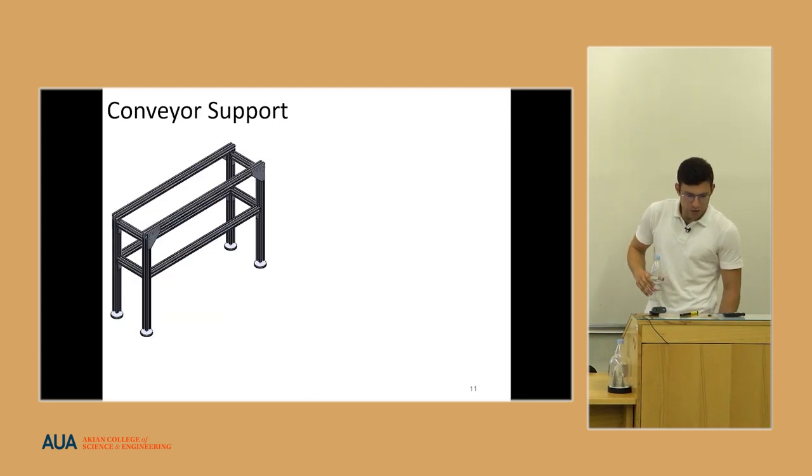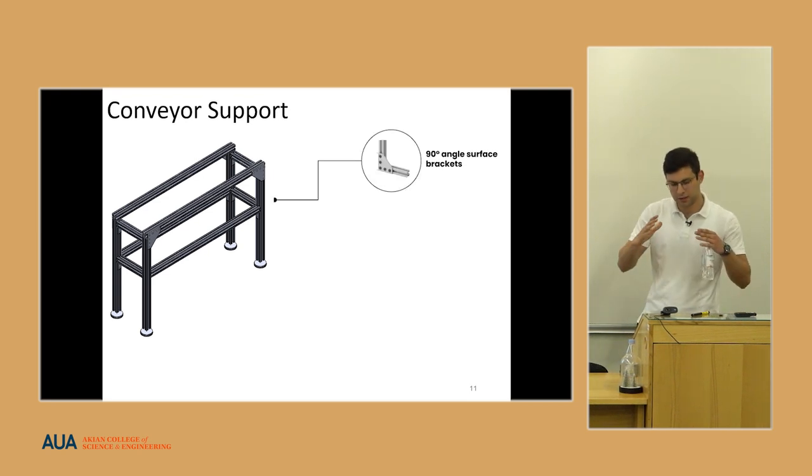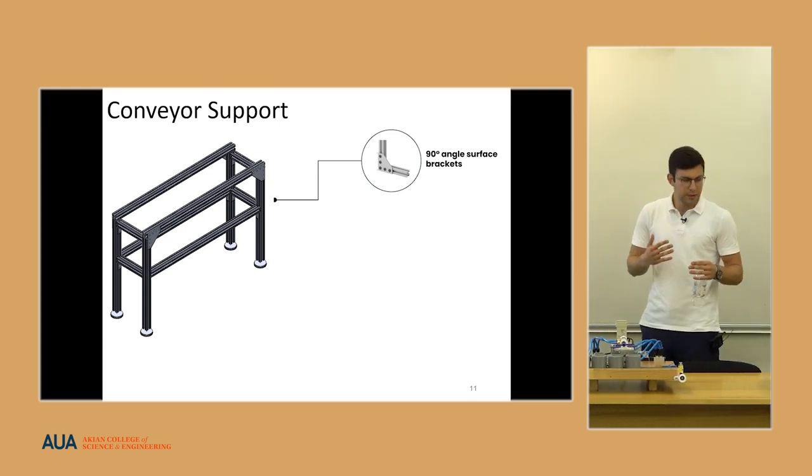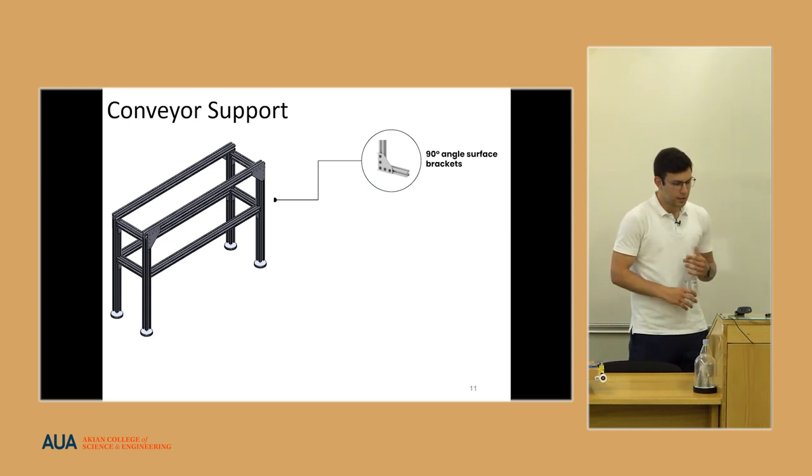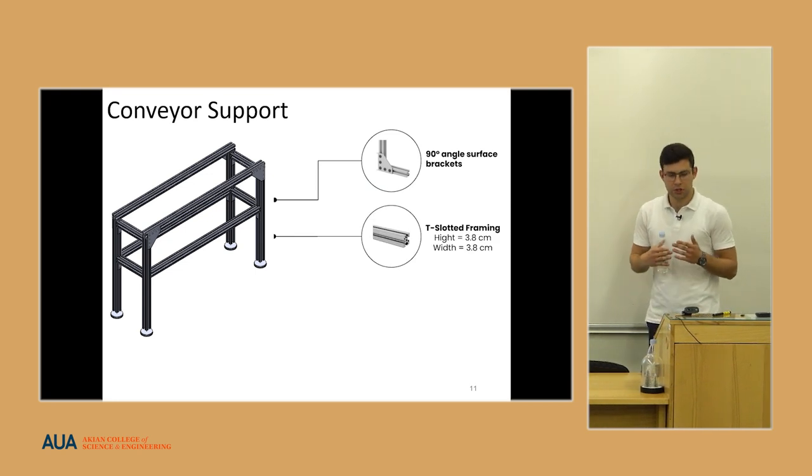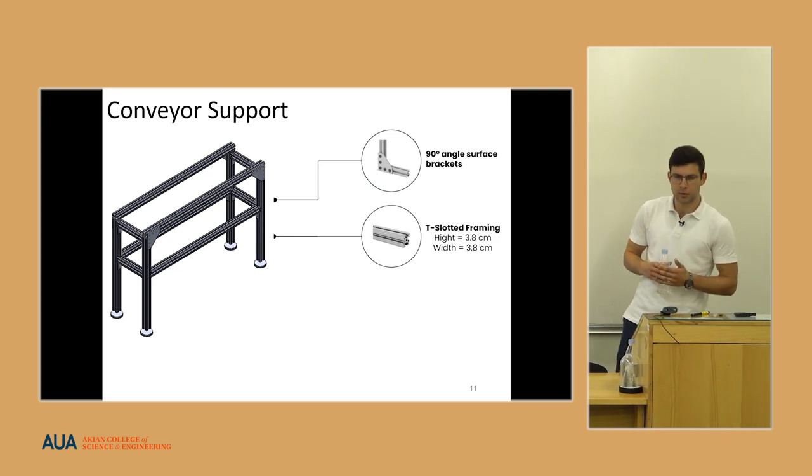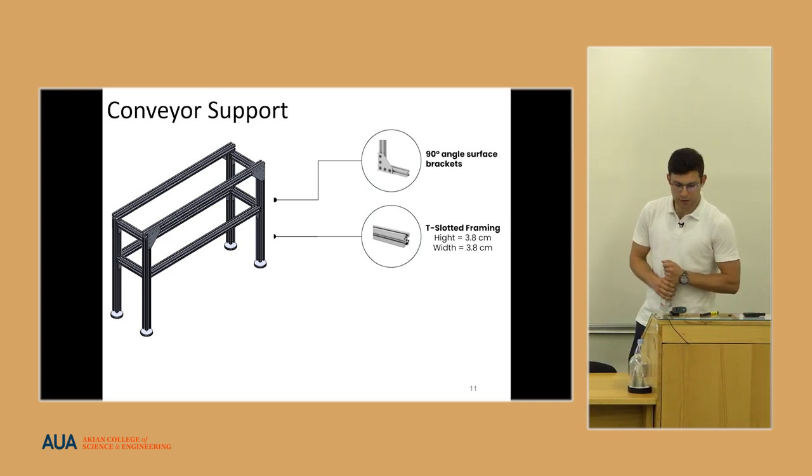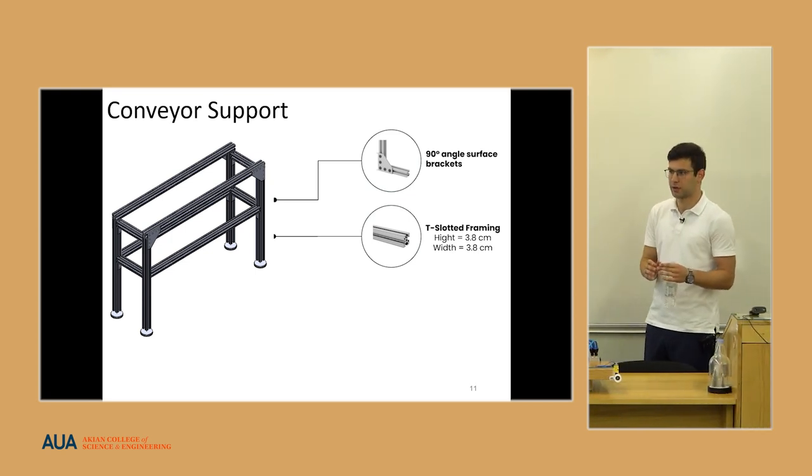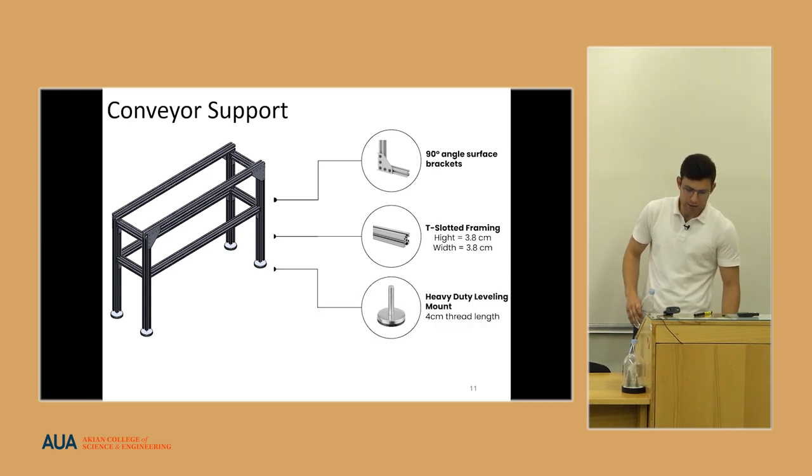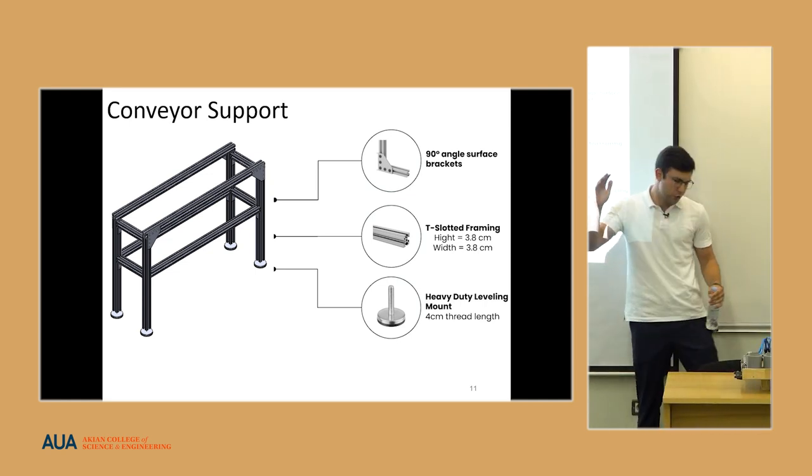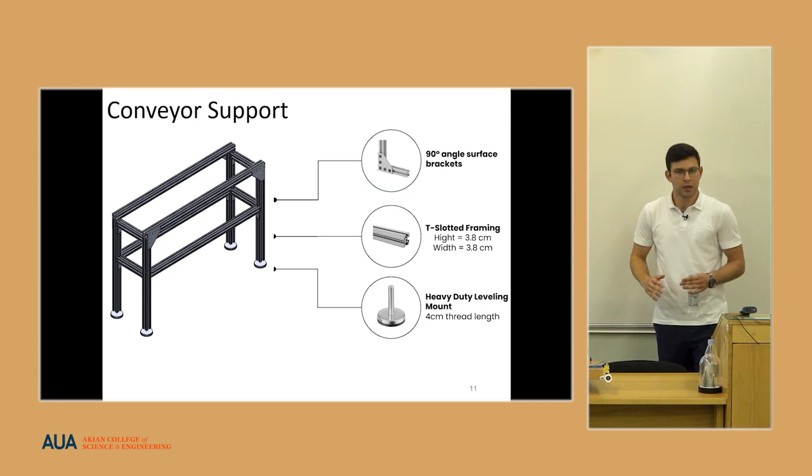The support structure is chosen to give reinforcement and to be steady during the operation. We use 90 degree angle surface brackets to connect the T-slotted framing which has 3.8 centimeters height and width. I use this specific type of framing because first of all it is very durable and second of all it is easy to attach things on it without screwing anything. Also the heavy duty leveling mounts here for the four legs so we can leverage the height of the conveyor system within 4 centimeters.